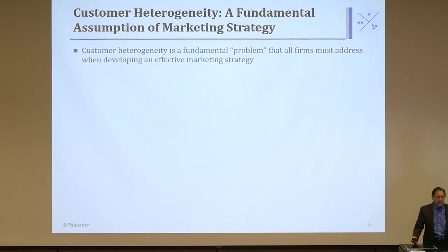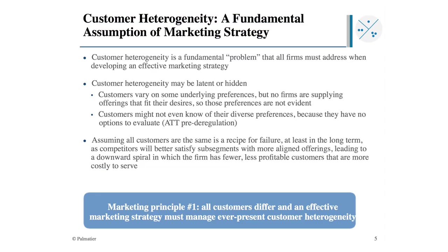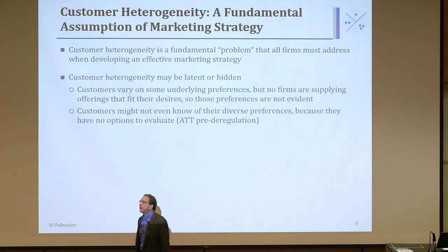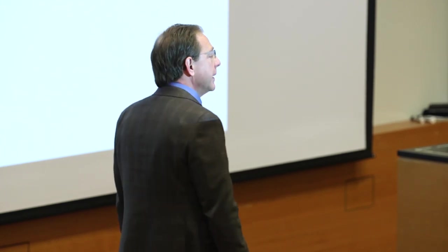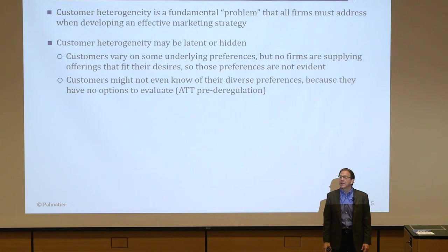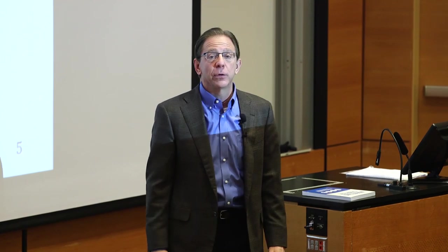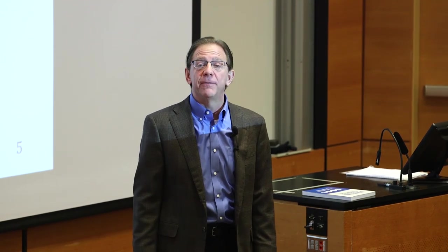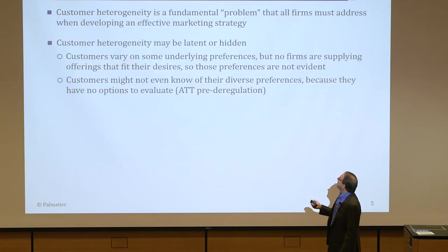Customer heterogeneity is a fundamental problem that all firms need to address. You can't launch one product to the whole market. But sometimes that customer heterogeneity may be latent or hidden. You might look at a market and say, well, there's only one product being sold — maybe there's no variation in customers. I would argue in many cases there is variation in what customers want, but nobody's found or uncovered what these variants are. I'll give you an example with AT&T and phones.